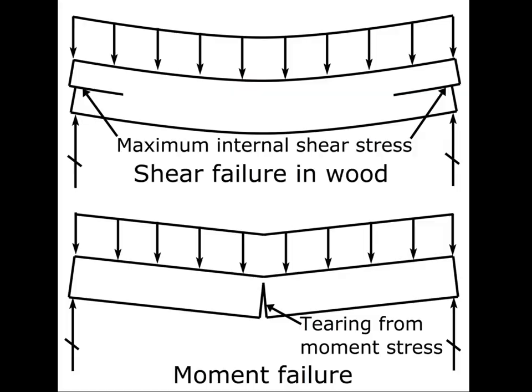In our last video we talked about modes of failure for a beam. We mentioned that shear stress is one possible mode of failure, and we did a sketch of how a wood beam would fail in shear — along the center line of the beam in its vertical dimension near the ends. The shear force and shear stress is largest near the end of the beam and at the neutral axis. The neutral axis, or the plane down the middle of the beam, is called neutral because the moment stresses are zero there. But it's definitely not neutral in terms of shear force.